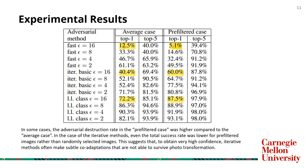The second finding is that in some cases, adversarial destruction rates in pre-filtered cases were higher compared to average cases. The average case randomly picks images from the dataset, while in the iterative methods case, the total success rate was lower for pre-filtered images than randomly selected images. This suggests that to obtain very high confidence, iterative methods often make subtle adaptations that cannot survive photo transformation.